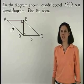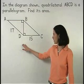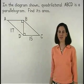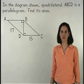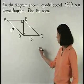In this example, we're given the quadrilateral ABCD is a parallelogram, and we're asked to find its area. Remember that the formula for the area of a parallelogram is base times height.